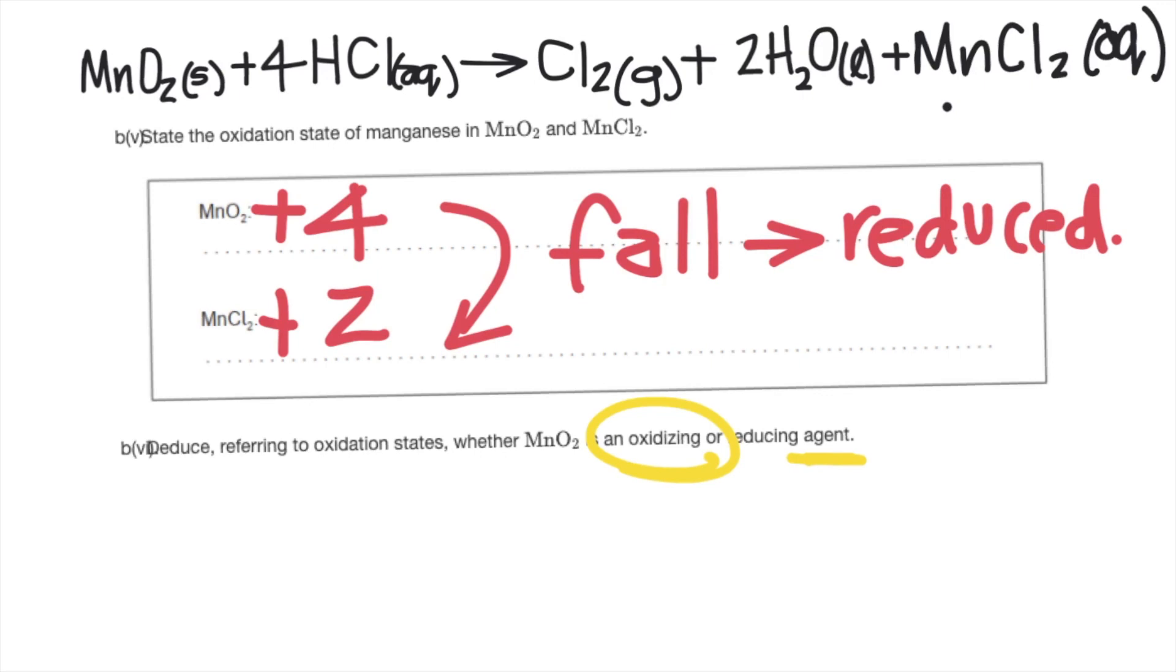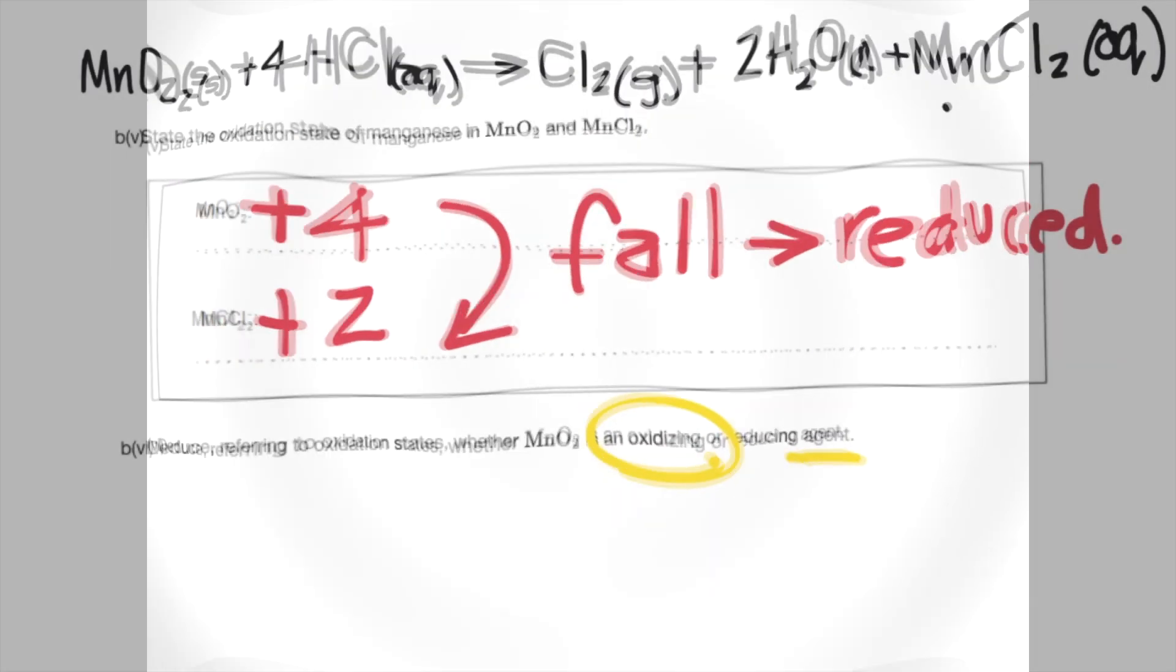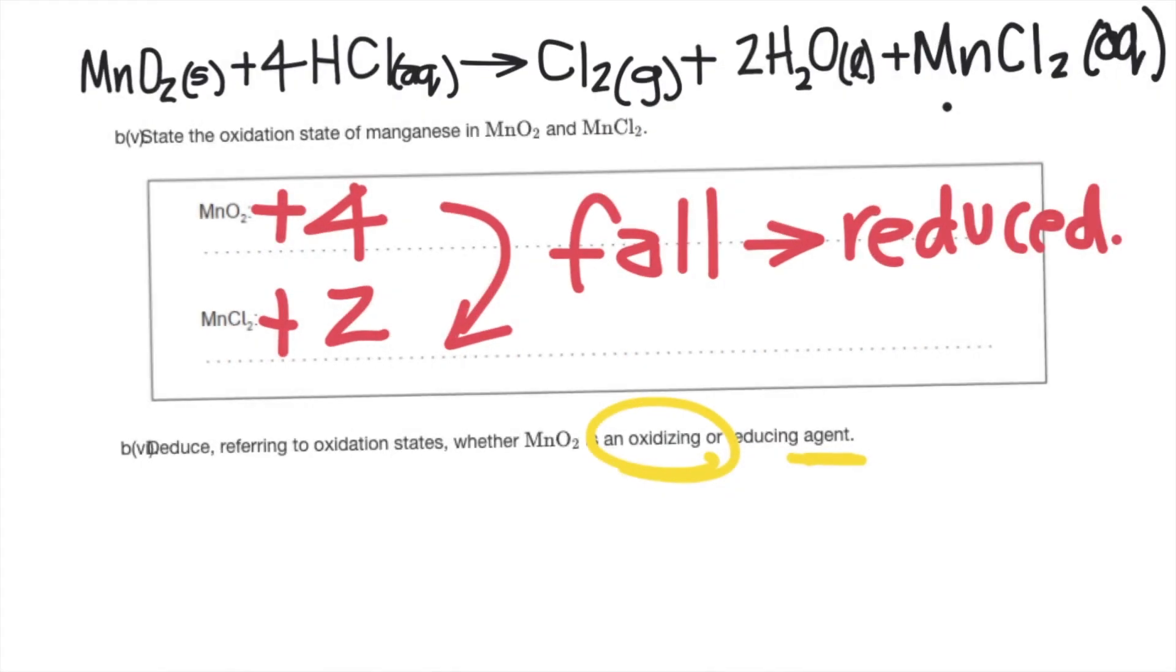You can tell this by knowing that the entire entity must be neutral and oxygen carries a charge of minus 2, and there are two oxygens which would be minus 4, so therefore to make the entire structure neutral manganese must be positive 4. And for the plus 2 it's obvious, you could see that Mn has a positive 2 charge and it's reacting with Cl minus to form MnCl2. So there's this fall in oxidation number as you go from MnO2 to MnCl2.